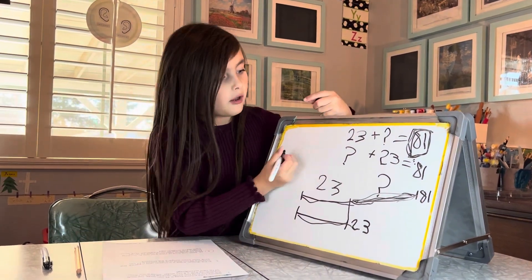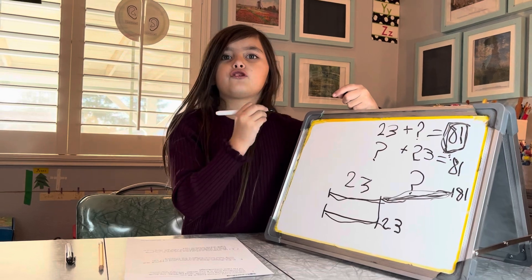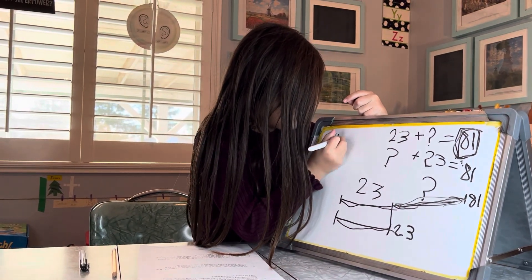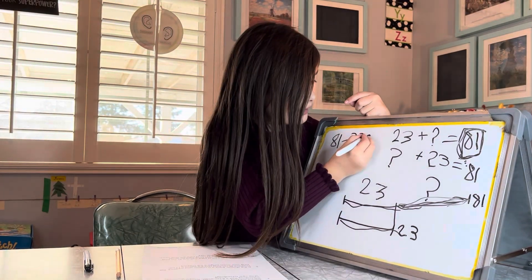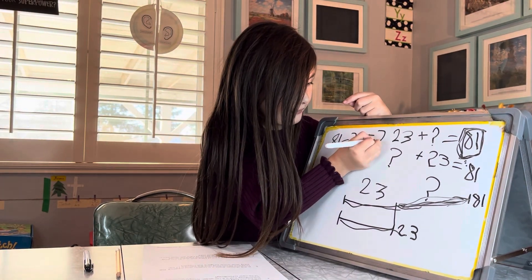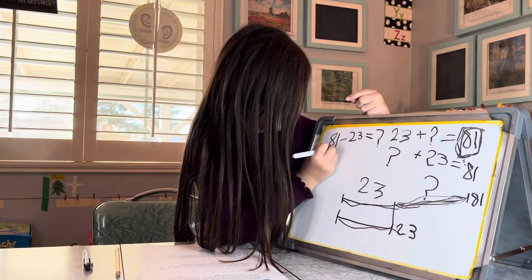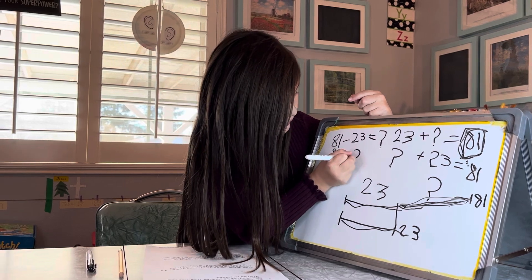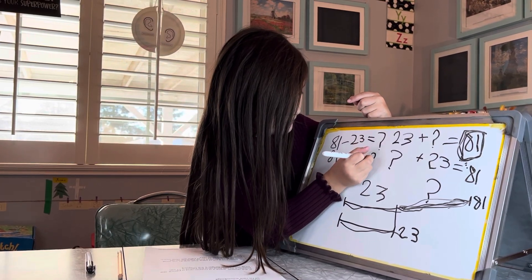Now for the takeaway problems. The 81 goes at the very, very start. 81 takeaway 23 equals something or 81 takeaway mystery number equals 23.